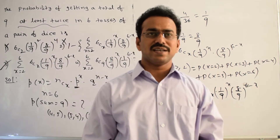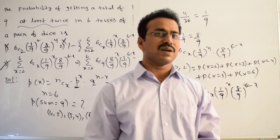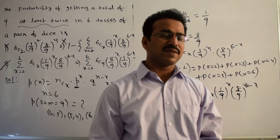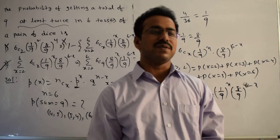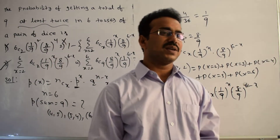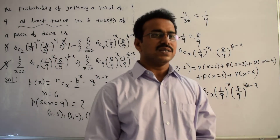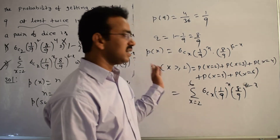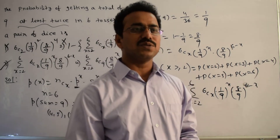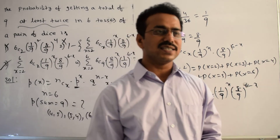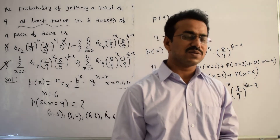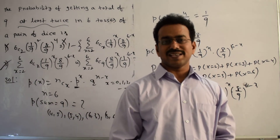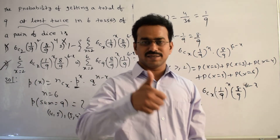So the procedure used here: we applied the binomial distribution, found the parameters n and p values, calculated q as well. Finally, we calculated the probability of X greater than or equal to 2, meaning at least 2 times to get a sum of 9. Thanks for watching.